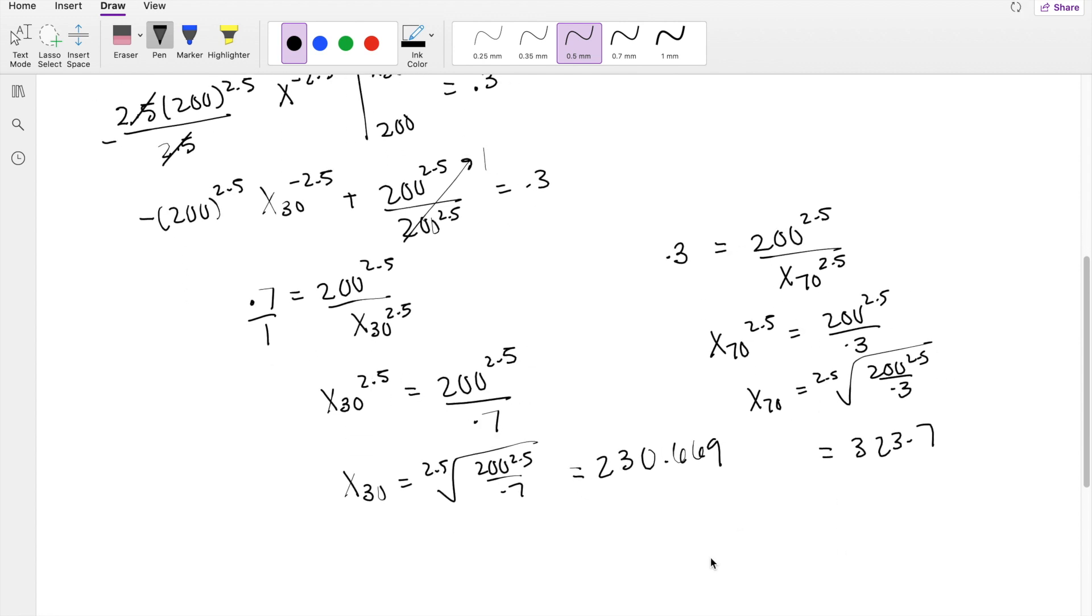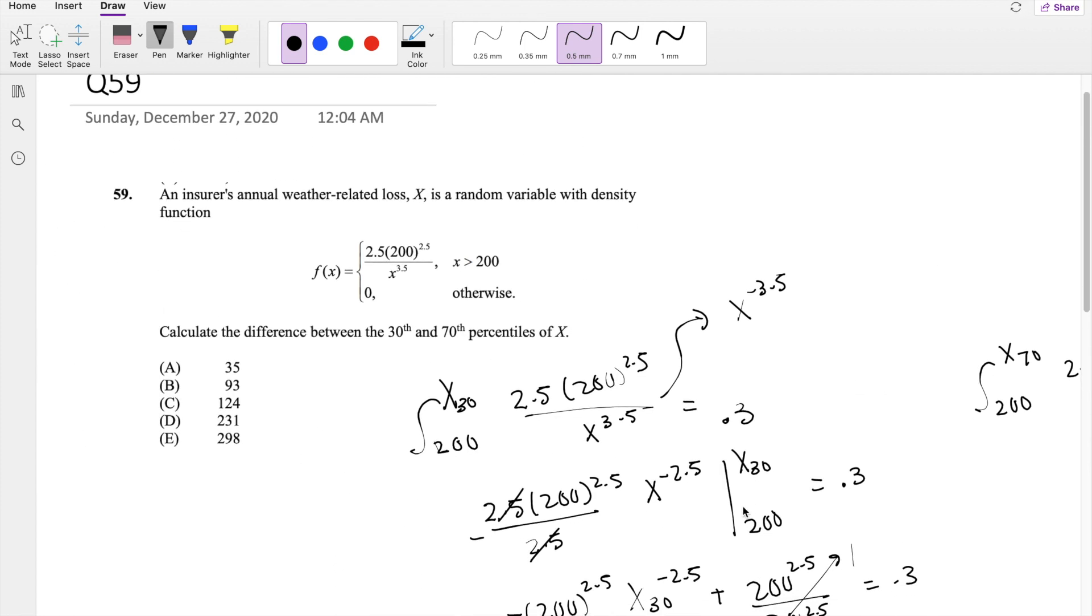Taking the difference, you get 323.7 minus 230.669, which is equal to 93, which is our answer B.